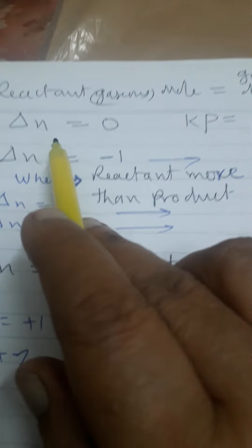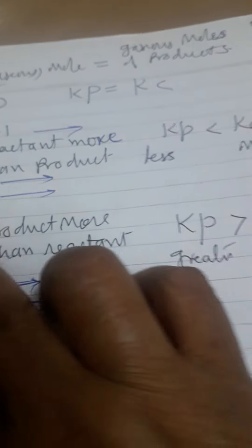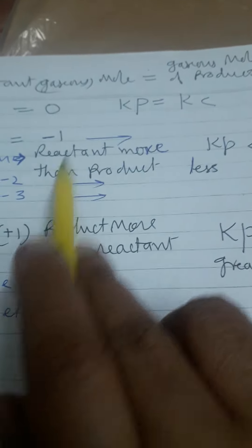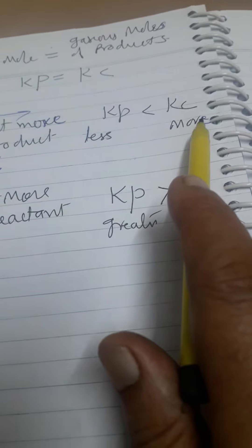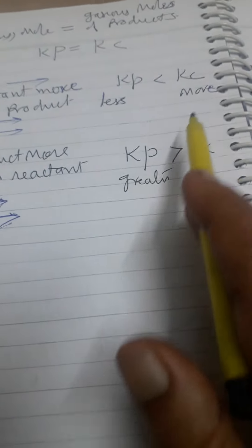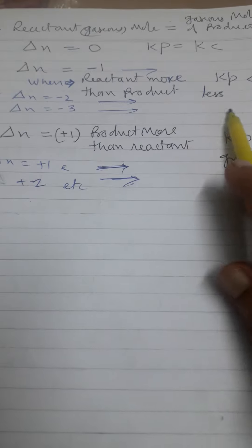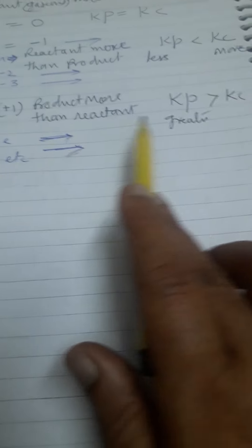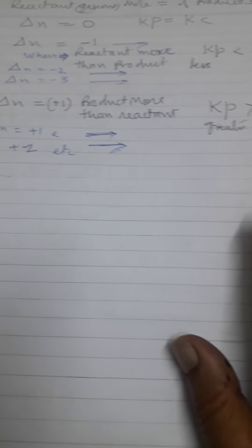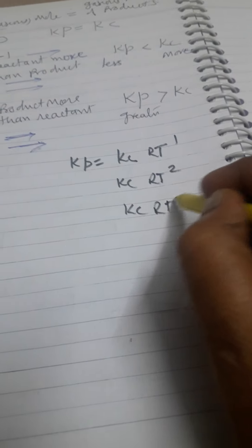When ΔN = 0, the moles of reactants and products are equal, so Kp equals Kc. When ΔN is -1, -2, or -3, Kp will be less than Kc. As the magnitude of negative ΔN increases (e.g., -3, -4), Kc becomes much higher compared to Kp. We can write these as Kp = Kc/RT, Kp = Kc/RT², Kp = Kc/RT³, and so on.